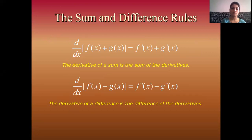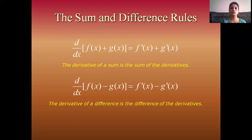Next rule: the sum and difference rule. For the sum rule, the derivative of f(x) + g(x) with respect to x equals f'(x) + g'(x). The derivative of a sum is the sum of the derivatives. For the difference rule, d/dx of f(x) − g(x) = f'(x) − g'(x). The derivative of a difference is the difference of the derivatives.